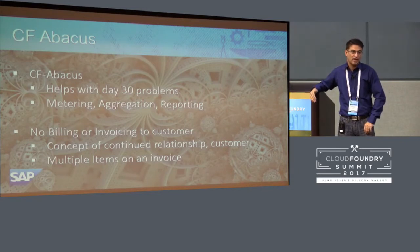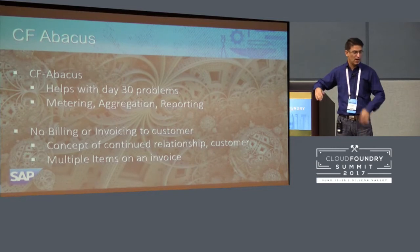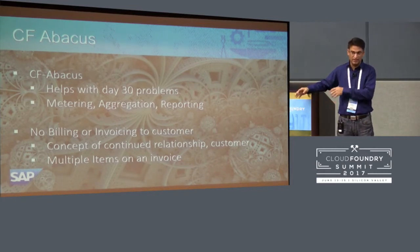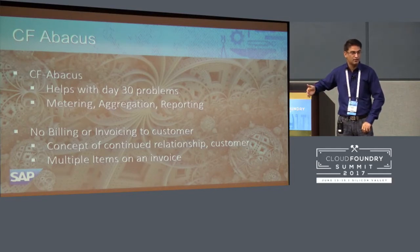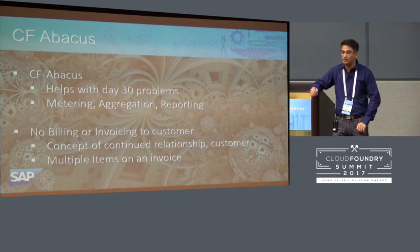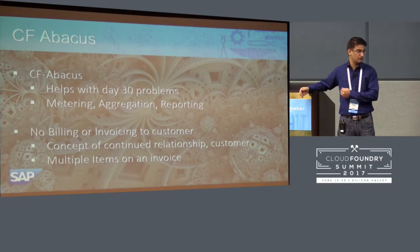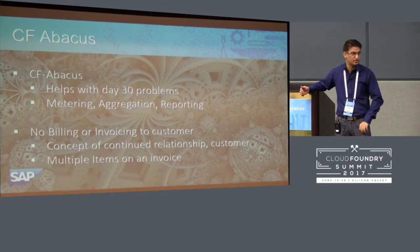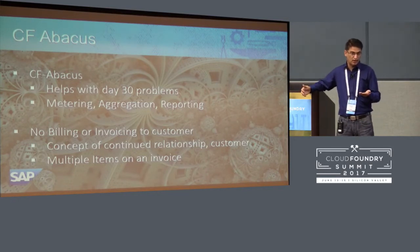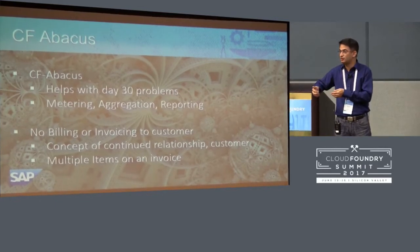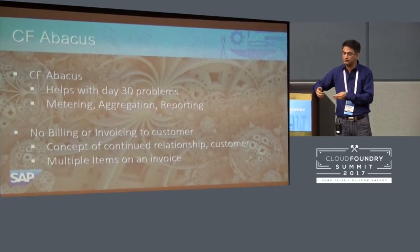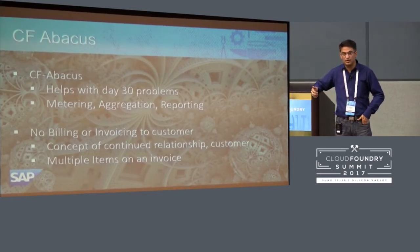Why is CF Abacus important? If you follow Cloud Foundry, there is BOSH. BOSH is famous for helping with day-one and day-two problems — day one being getting the system deployed properly with all dependencies, and day two keeping it live. I call CF Abacus the solution to the day-30 problem, meaning I need to bill my customers. Whether it's SAP, IBM, Google, or AWS billing their customers at end of month, or Comcast doing internal chargeback for teams using their APIs — those are the problems CF Abacus addresses.